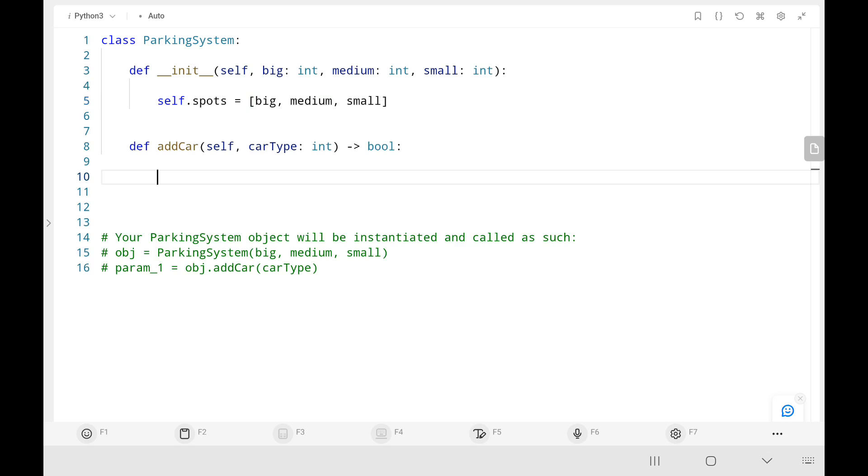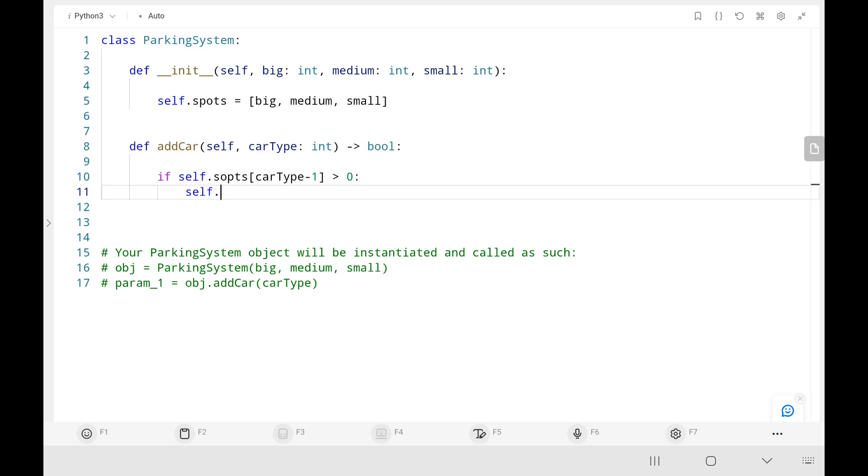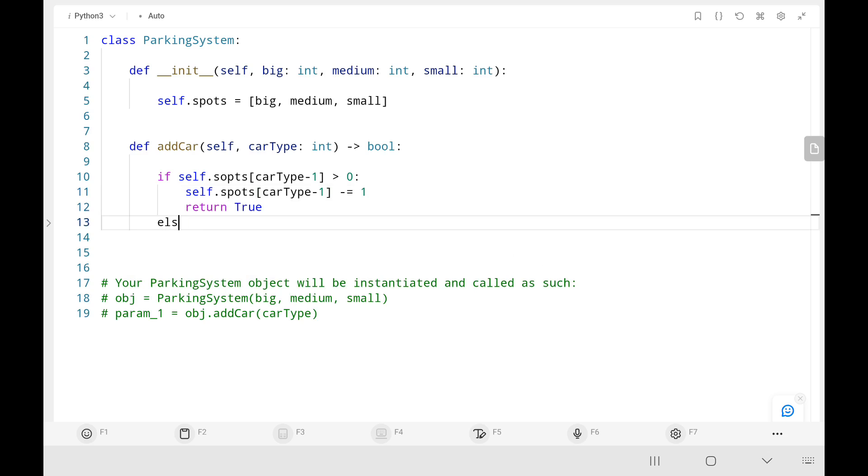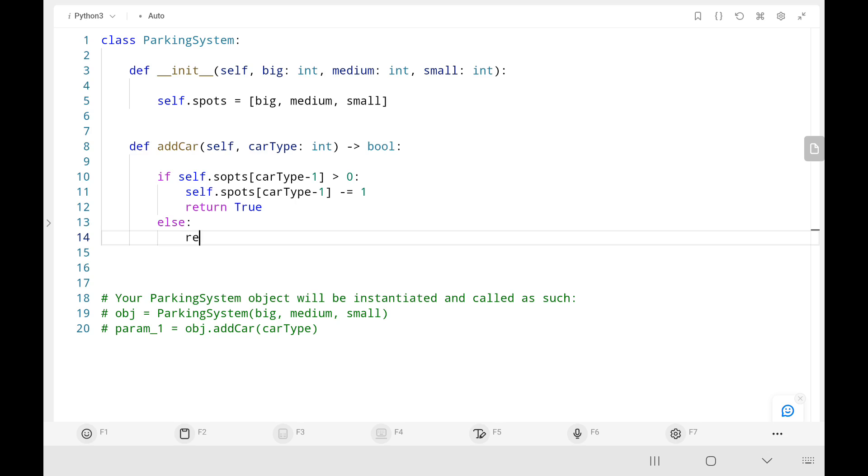Then in the addCar function, I need to check whether there is space available for that particular car. I will take the car type and reduce by 1, then check if there are any spots available for that particular type of car. If it is available, I will reduce that particular spot by 1 since I have parked that car. Then I need to return true. If there is no spot available, then I need to return false. That's all the code is. Now we will run the code.